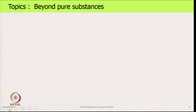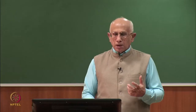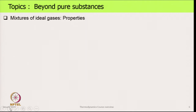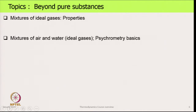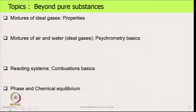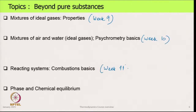In the last module we will go beyond pure substances and look at mixtures of ideal gases and their properties. Then we look at mixtures of air and water and the basics of psychrometry. Then we will look at reacting systems and the basics of combustion, and phase and chemical equilibrium. This will take us into weeks 9, 10, 11 and 12.